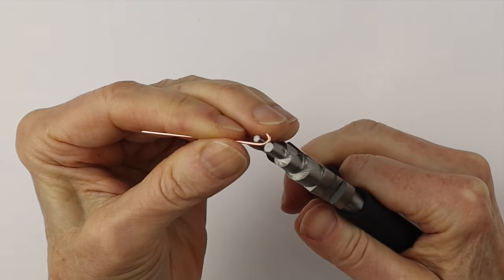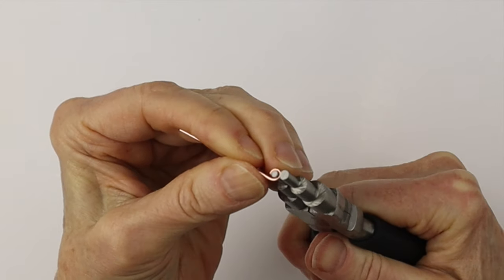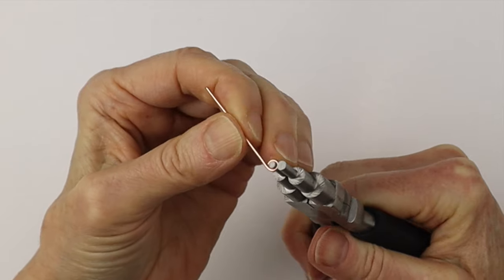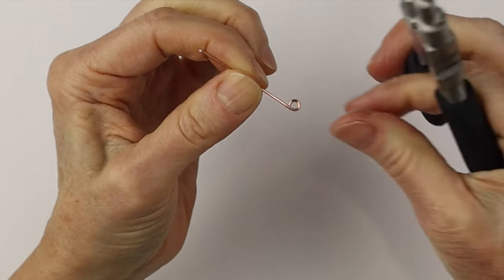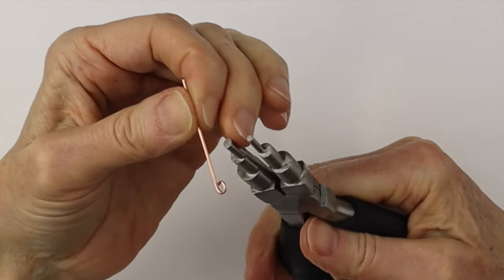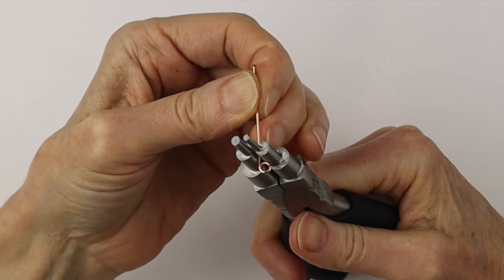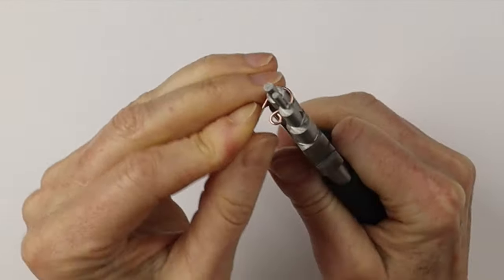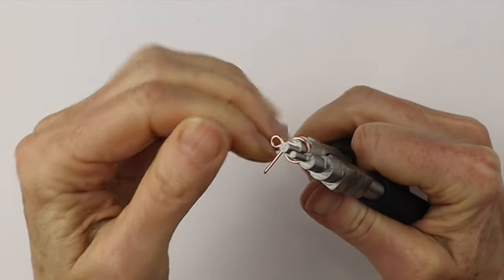We're going to take our beadle looping pliers and just do a little loop. We want that loop to be closed. Then we are going to go to the other side and do the larger loop.